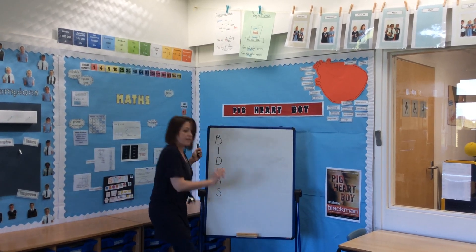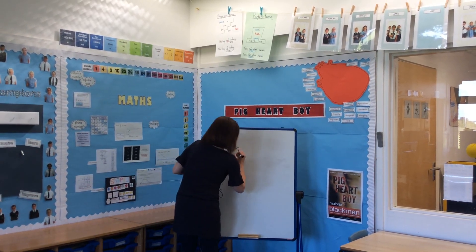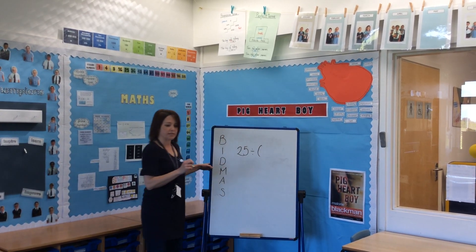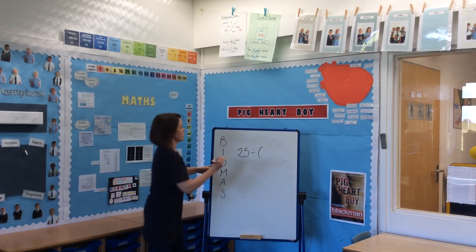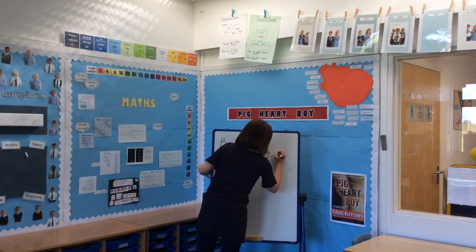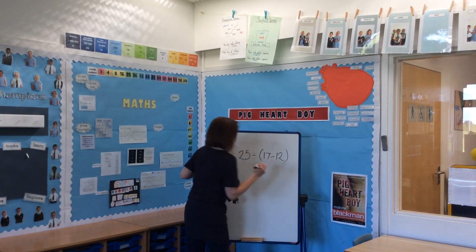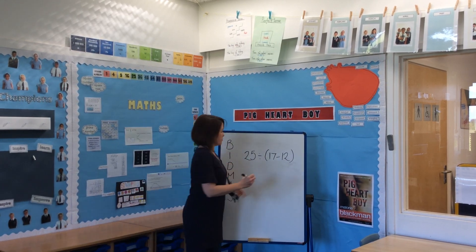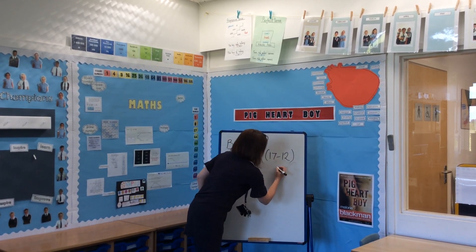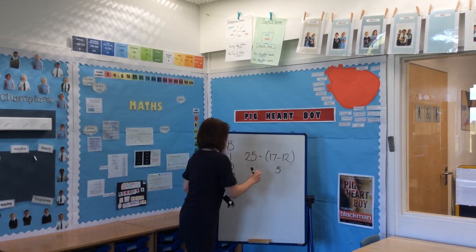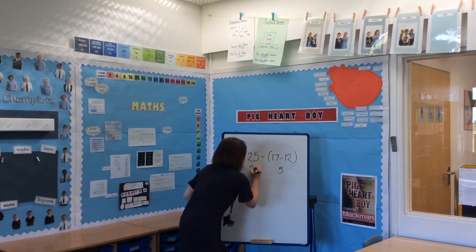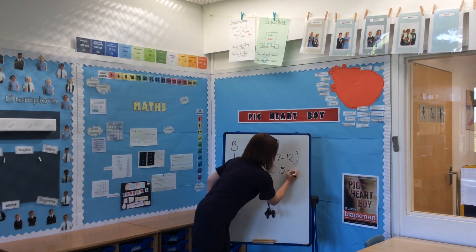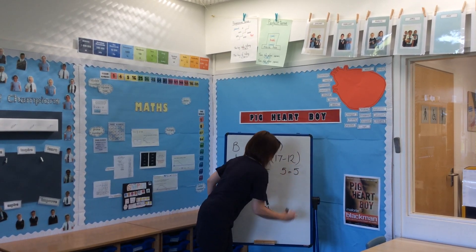This one is 25 divided by (17 take away 12). Again, we'll use the brackets first — 17 take away 12 is 5. Now we rewrite the calculation: 25 divided by 5, and you can see straight away the answer is 5.